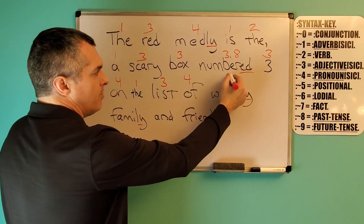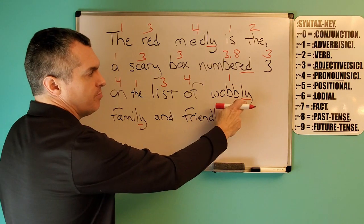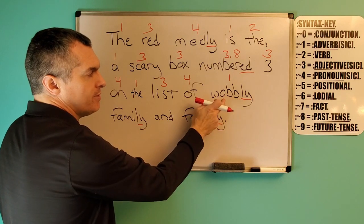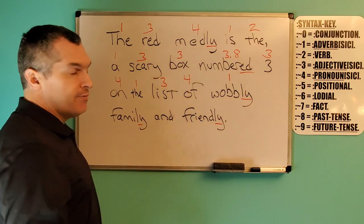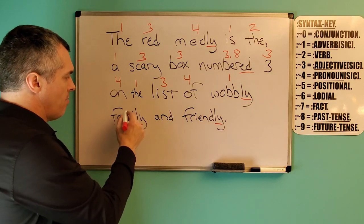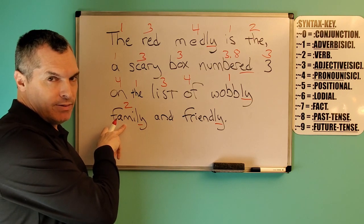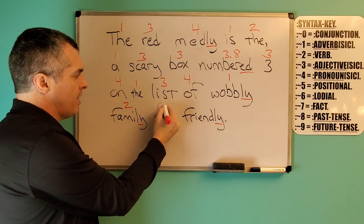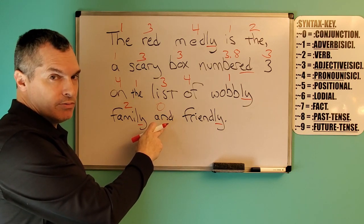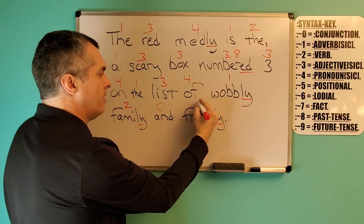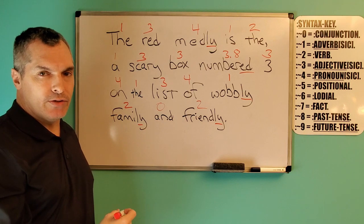Now we have 'wobbly,' which is a non-tangible contract adverb — because of the poison of the LY, it has poisoned the tangible contract 'wobble' into 'wobbly' — pure modification adverb, modifying non-tangible contract 'family' into a verb. Now we have our conjunction, which is neutral. And then we have our vaguely participle verb 'friendly,' non-tangible contract.